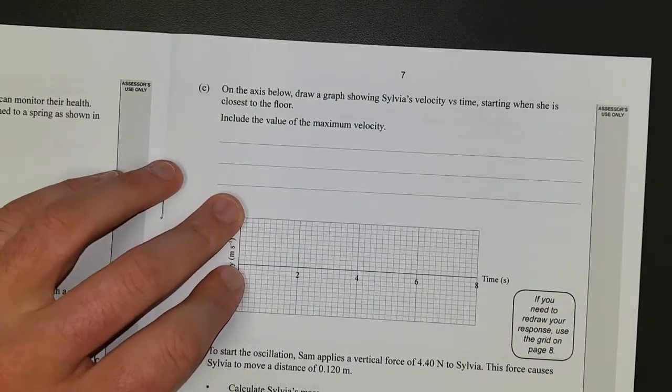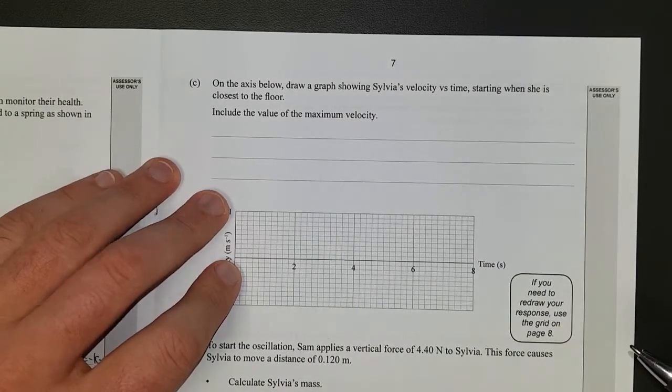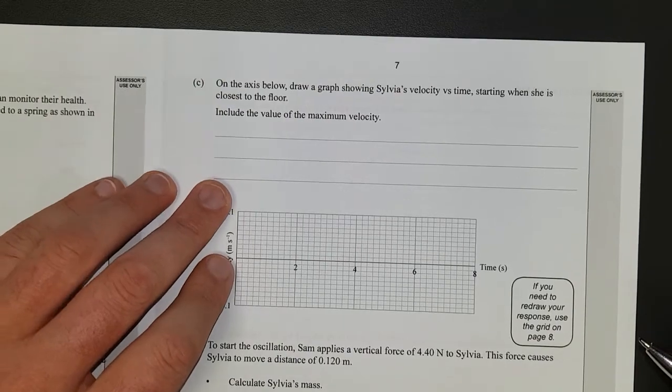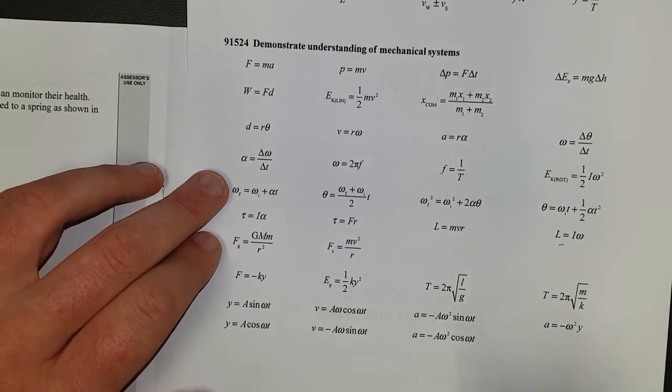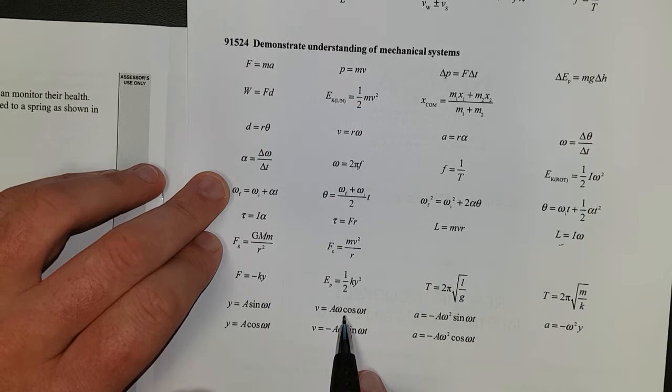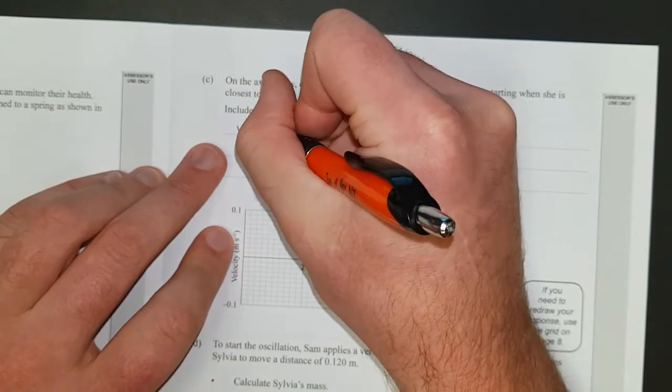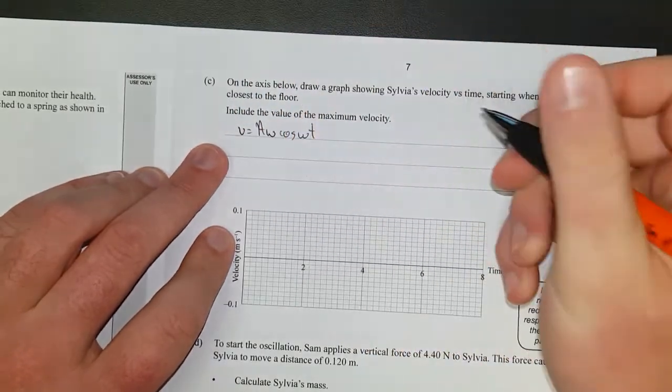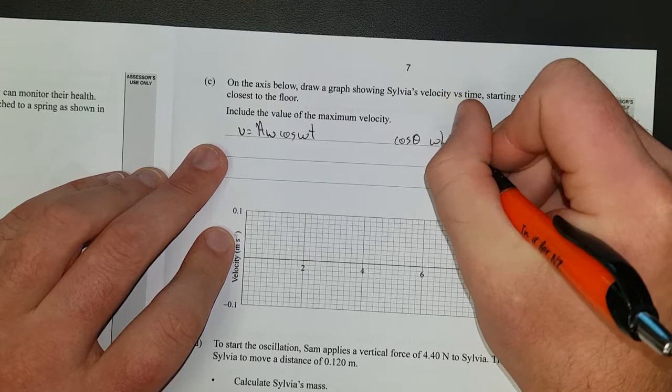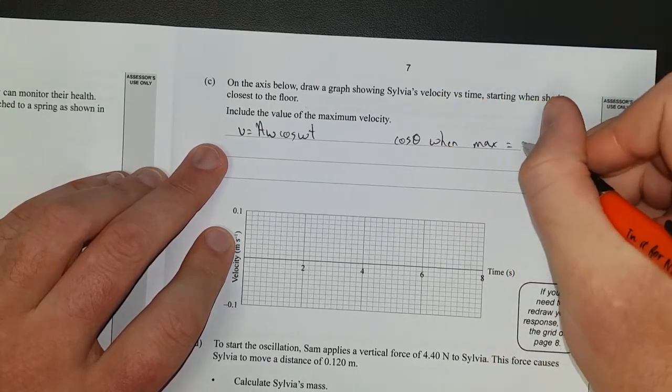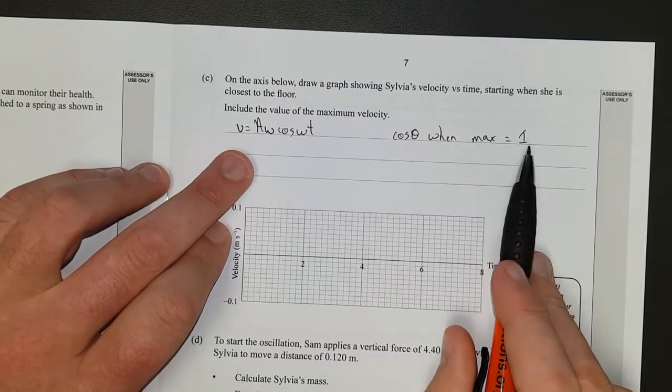Right. On the axis below, draw a graph showing Sylvia's velocity versus time when she is closest to the floor. Include the value for maximum velocity. So, let's just, on our formula sheet, where is our formula sheet? Here it is. We have velocity is equal to a omega cos omega t. So let's just write that down. V equals a omega cos omega t. Cos, we'll just put theta, because theta is equal to omega t. When it's max, when max equals 1. So when the largest cos theta can be, or cos omega t can be, is 1 when it's maximum.